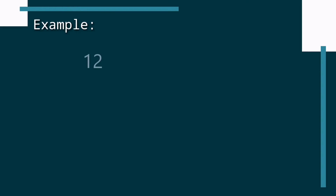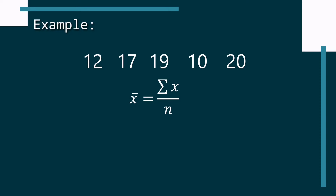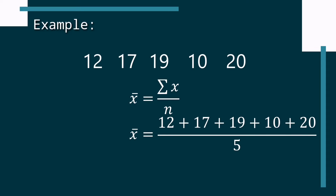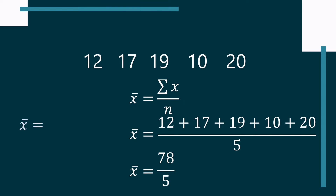For example, suppose we have the following data: 12, 17, 19, 10, and 20. To find the mean, we use the formula x-bar equals summation of x divided by n. The first step is to add the given numbers, so we write x-bar equals 12 plus 17 plus 19 plus 10 plus 20. Since we have 5 numbers to be added, the value of n is equal to 5. By adding the numbers, we get 78 divided by 5. 78 divided by 5 is equal to 15.6. Therefore, 15.6 is the mean of the given set of data.